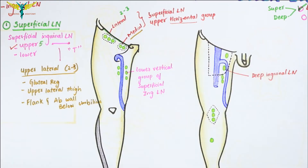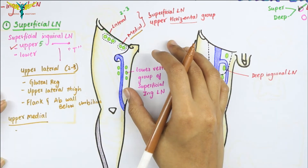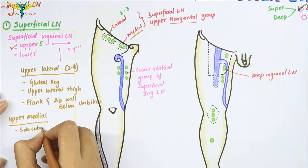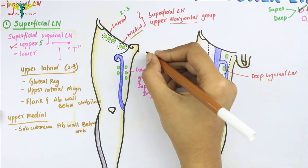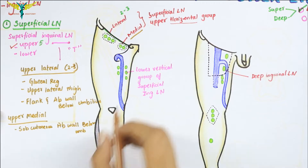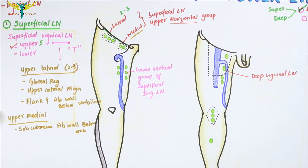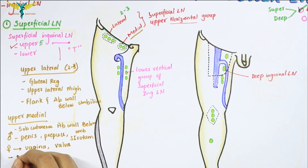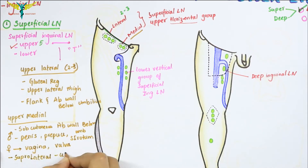The medial lymph nodes of the upper horizontal group drain lymph from the subcutaneous tissues of the anterior abdominal wall below the umbilicus. They also drain lymph from the penis including the prepuce and the scrotum, and the vulva and the vagina in the female. It also drains a few lymphatics from the supralateral part of the uterus and the round ligament of the uterus.